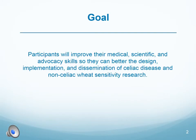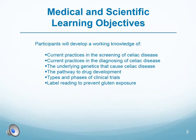The goal of this program is to improve your medical, scientific, and advocacy skills so you can better the design, implementation, and dissemination of celiac disease and non-celiac wheat sensitivity research. As a patient advocate, you will develop a working knowledge of current practices in the screening and diagnosing of celiac disease, the underlying genetics that cause celiac disease, the pathway to drug development, types and phases of clinical trials, and label reading to prevent gluten exposure.